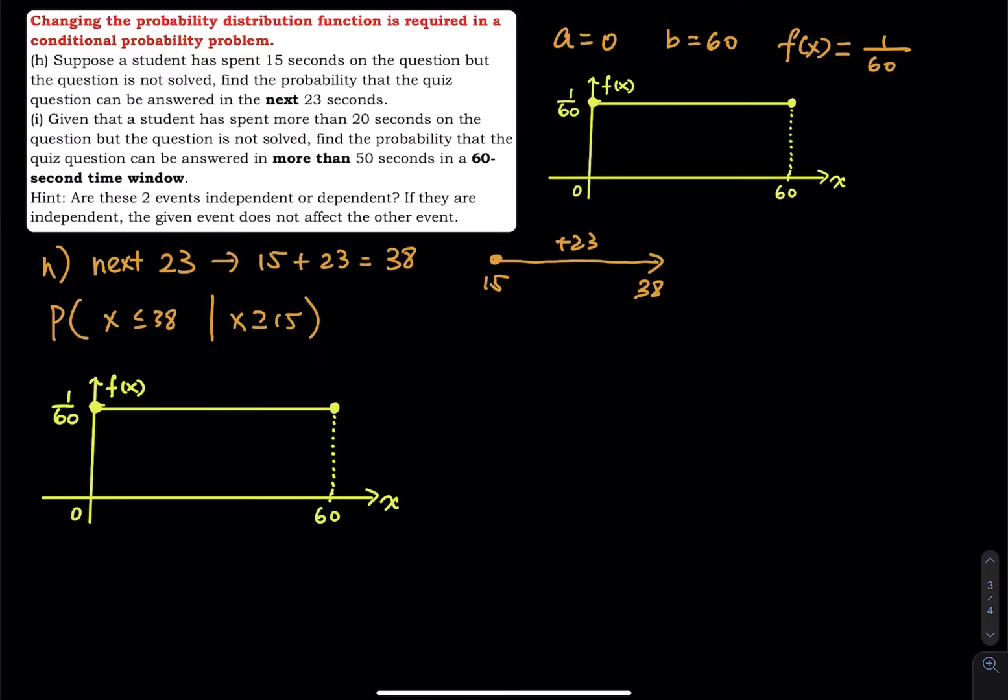So 15, assuming 15 is right here. So 15, and then this is 38. And then this is the probability that we are looking for, right? So what is another way to say this? Another way to say this is the probability that X is between 15 and 38.